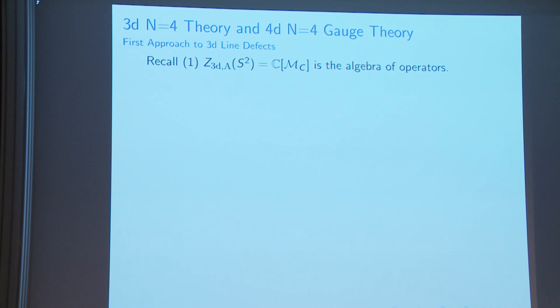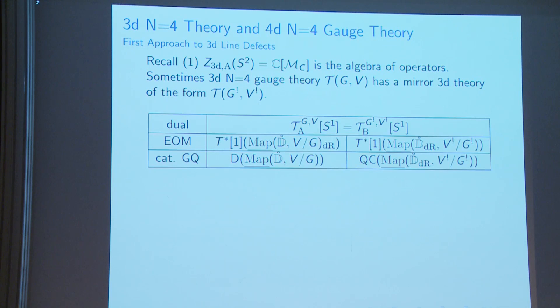Let me say what I hinted at the end of the third introduction. The A-twist TQFT — we realized we actually cannot call it a TQFT in the usual sense because we are seeing algebraic dependence. But you can compute equations of motion naively and take categorified geometric quantization naively. In some cases, T(G,V) has a mirror theory of known form T(G-check, V-check), and in this case you can write down the categorified geometric quantization through the equations of motion.